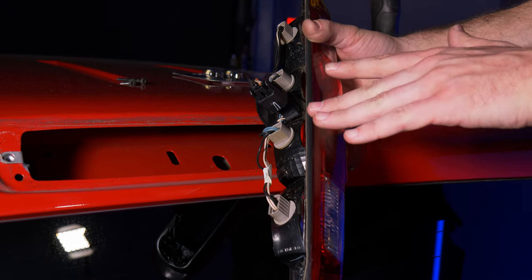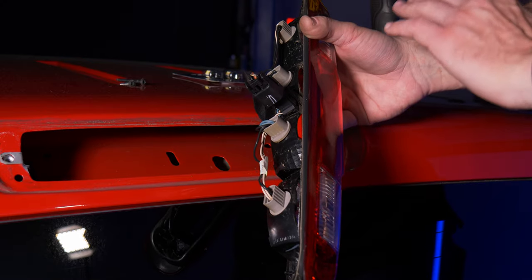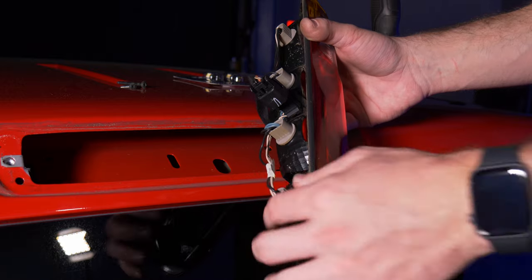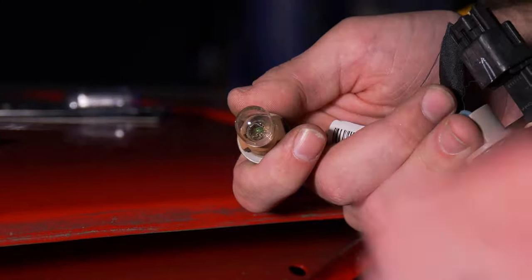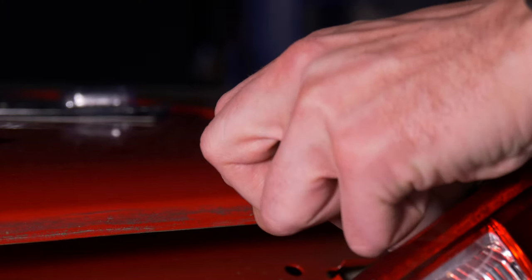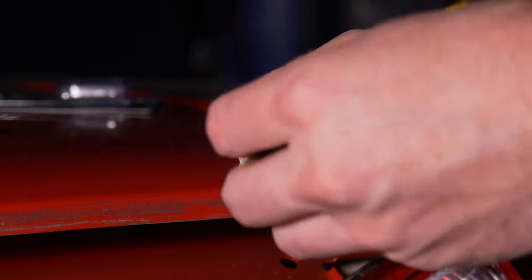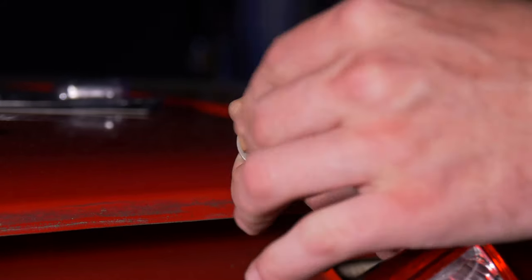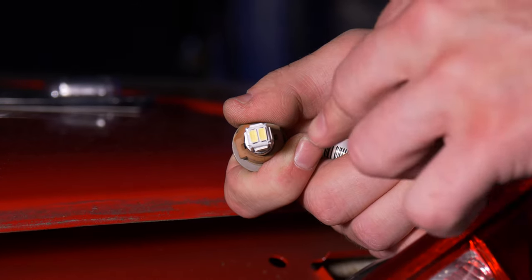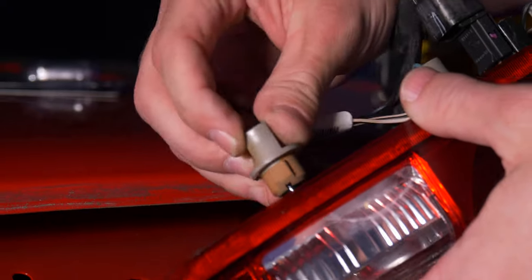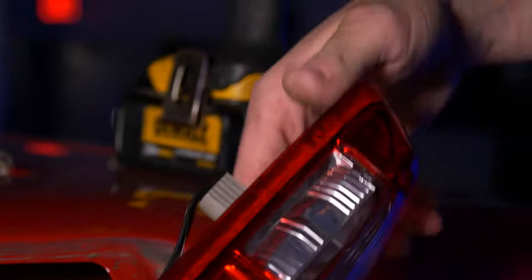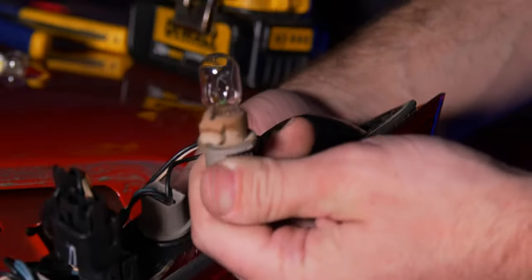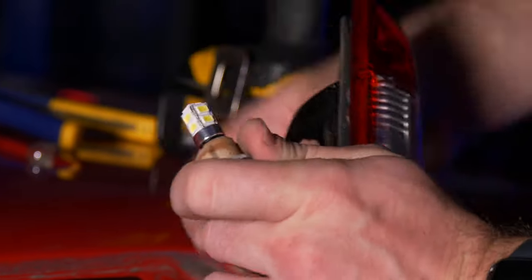Turn the bulb socket counterclockwise. Pop the bulb out. Remove your factory halogen bulb. And today we're going to be installing the GTR Lighting 10 LED Cargo Light Bulbs. Now these things are very similar to what we installed in the license plate lights. They're just a little bit longer with a little more power behind them. And they really do a good job in these housings. Twist it back in place. Do the same thing for this one. Go ahead and reinstall the screws.